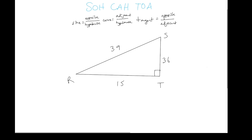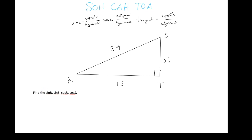Here's our triangle. We're going to find the sine of R, sine of S, cosine of R, and cosine of S. Starting with sine of R: from R, we take the opposite side — which is 36 — over the hypotenuse, which is 39. So sine of R equals 36 over 39. That is your answer.